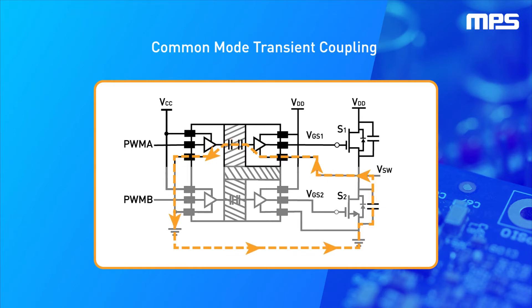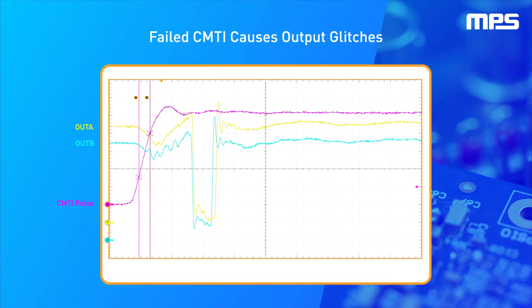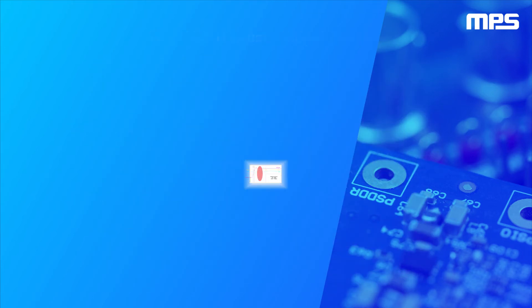If the CMTI isn't high enough, the high-power noise could be coupled across the isolated gate driver, generating a current loop and causing charge to appear at the switch gate. If this charge is large enough, it could cause the gate driver to misinterpret this noise for a driving signal, leading to a failed CMTI test. A large voltage transient applied to the driver's output can cause a sudden polarity switch in the gate voltage due to the noise coupling. Therefore, selecting an isolated gate driver that doesn't meet CMTI requirements can lead to serious circuit malfunction.